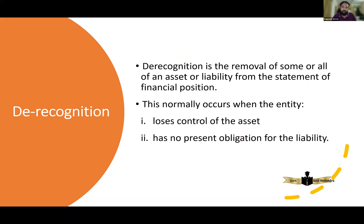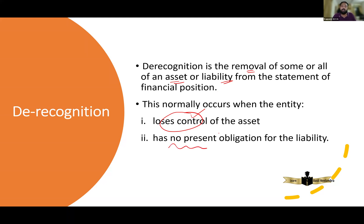The last topic is de-recognition — what do you mean by de-recognizing? It means removing an asset or removing a liability. An asset should be de-recognized when control is lost. Control is the most important word in the definition of an asset. When the entity loses control, that asset should be de-recognized. For liability, the definition is a present obligation — so whenever there is no more present obligation, we de-recognize the liability.